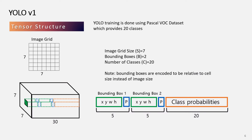Looking at the tensor structure from a 2D surface, it's basically a grid divided by the chosen grid size of 7x7. Looking at the tensor depth, each cell contains two bounding boxes followed by an object presence flag, then the class probabilities. The bounding boxes here are relative to the cell instead of the whole image. This means an encoding step is required to encode the raw label into a tensor before training, and a decoding step is required during inference to decode the tensor back into bounding box coordinates and class information.